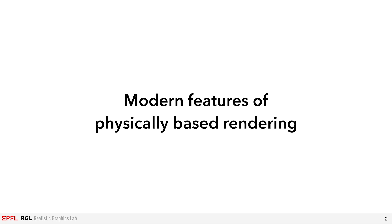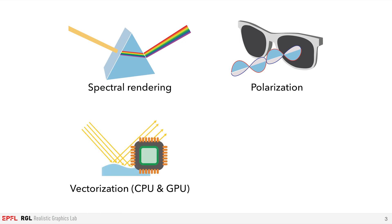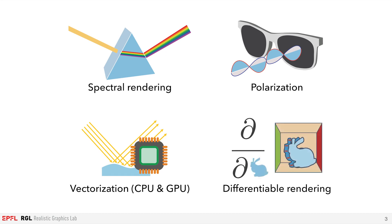This project started with the observation that physically based rendering systems are faced with increasingly complex requirements. For instance, in an accurate simulation, we may need to account for the spectral properties of light or even its polarization. At the same time, we'd like to run our rendering algorithms efficiently, for example by taking advantage of the vector instructions on modern CPUs. Finally, we may want to solve challenging inverse problems using differentiable rendering.